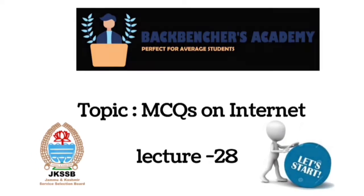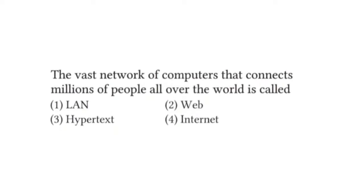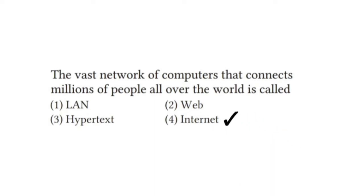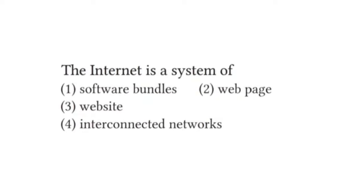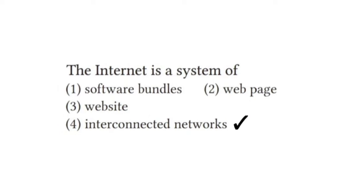First question: the network of computers which connects millions and trillions of people to the world — what are we talking about? The answer is internet. Next question: internet is a system of — web pages, websites, software bundles, or interconnected networks? We are talking about many networks connecting, so the correct answer is the fourth option: interconnected networks.